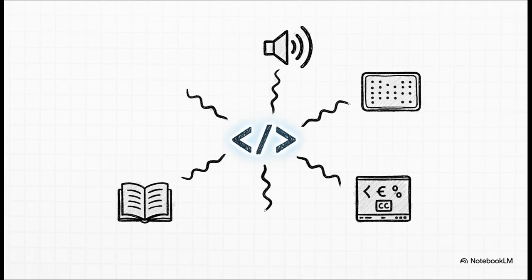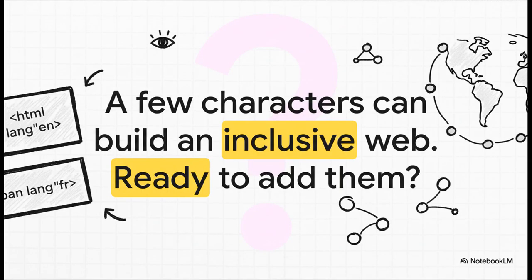What's really amazing is the ripple effect of this one small change. It ensures correct pronunciation, which is huge. But it also helps create accurate Braille translations, helps browsers display special characters correctly, makes sure media players show captions right, and even helps dictionary tools give you the correct definition. It is a win-win-win all around. Adding just a few characters of code can completely transform a confusing, frustrating experience into one that's clear and seamless — a tiny bit of effort that helps create a more inclusive web for everyone. So the only question left is: are you ready to add them?